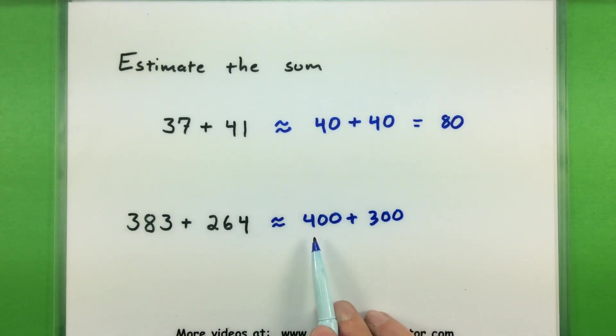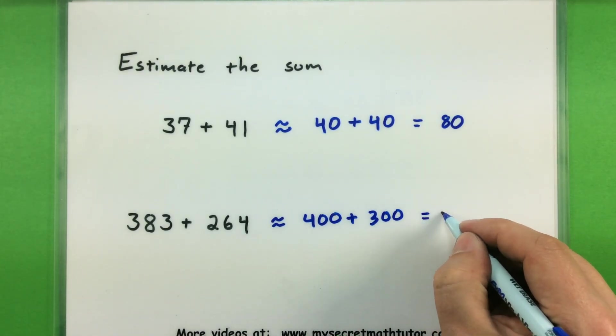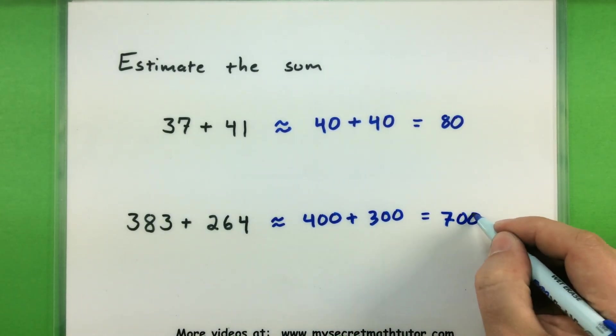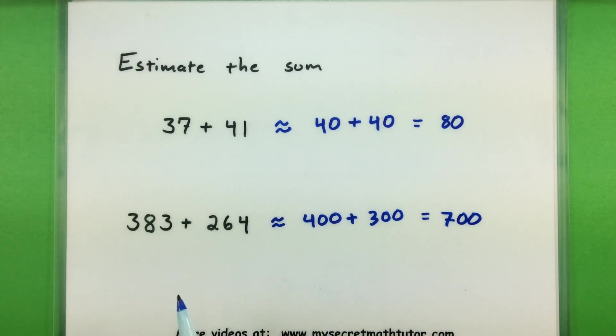So now I only have to add the four and the three together. That'll give me a seven. And the rest of the numbers are all zero. So I have 700. So a good estimate of this sum is 700.